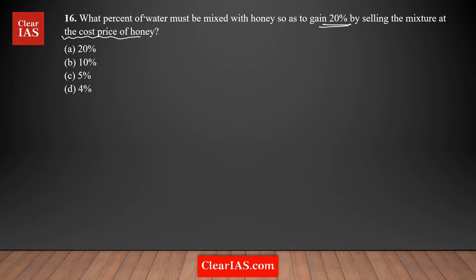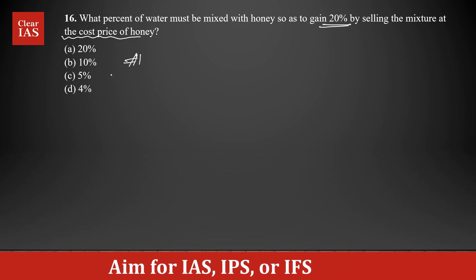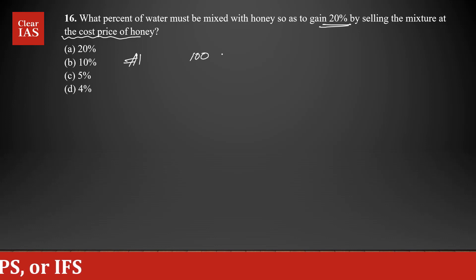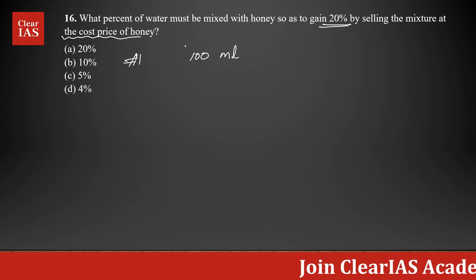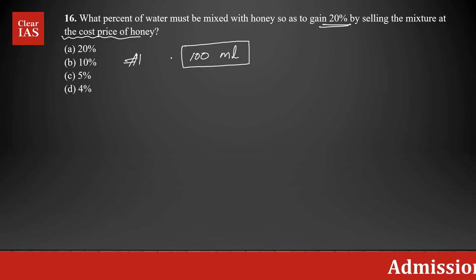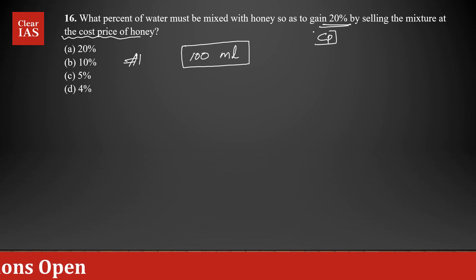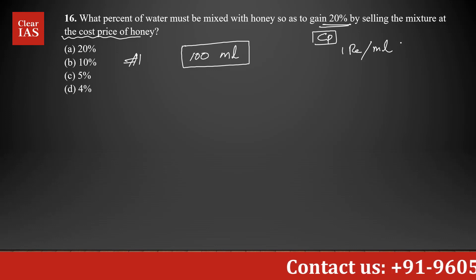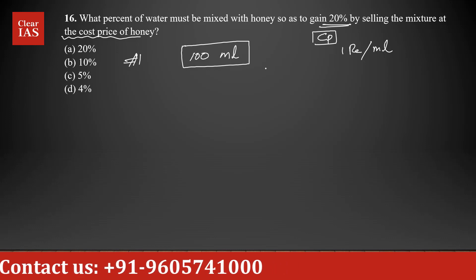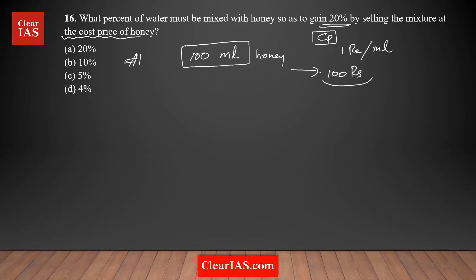I don't want to use formulas here. I'm approaching this question with a clear mind and a simple example — Approach number one. Let's say I have 100 ml of honey. Whenever you have a scenario where the cost price is same as selling price with a liquid, it's always a good idea to assume the cost price is equal to one rupee per ml. So for buying 100 ml of honey, I gave 100 rupees — that is my cost.